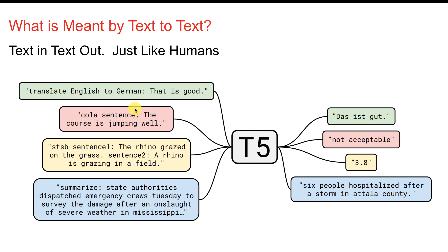CoLA uses a grammar and 'does the sentence make sense' training set, actually compiled from grammar books. The sentence 'the course is jumping well' — well, courses don't jump. So it's going to say 'not acceptable.' The model knows something about the sentence and it can pick up on bad grammar and on things that just don't work well together. This noun does not tend to jump.